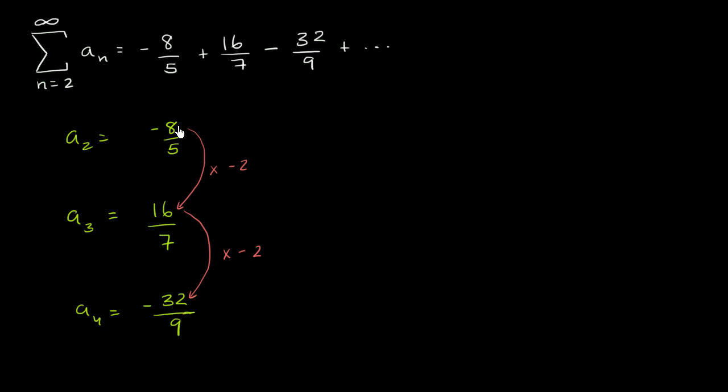So you might say, OK, whatever we have in the numerator must be a power of negative 2. And if you say, well, maybe this is negative 2 squared. Well, you know that negative 8 isn't negative 2 squared. Negative 2 squared is equal to positive 4. Negative 8, this right over here, that is equal to negative 2 to the third power. 16 is equal to negative 2 to the fourth power. Negative 32 is equal to negative 2 to the fifth power.